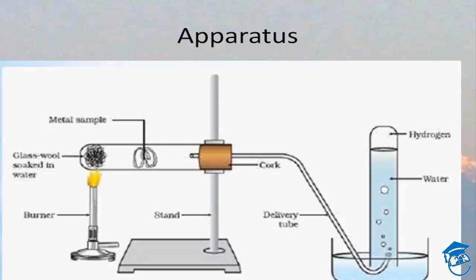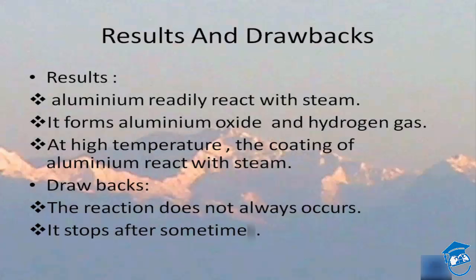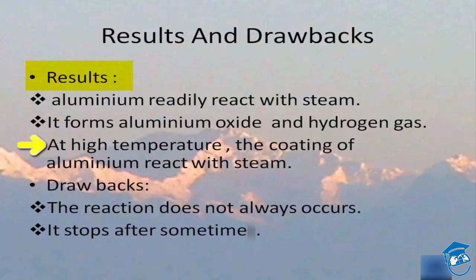This experiment also has some drawbacks. The result is that it does give out hydrogen gas and aluminium oxide, but it is important to know that aluminium does not readily react with steam. Only at high temperatures is the coating of aluminium oxide broken and the reaction takes place. The drawback is that the reaction does not always occur because of the coating of aluminium oxide on the metal, and it stops after some time.